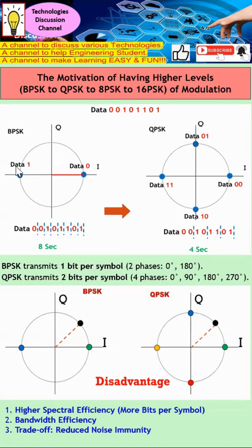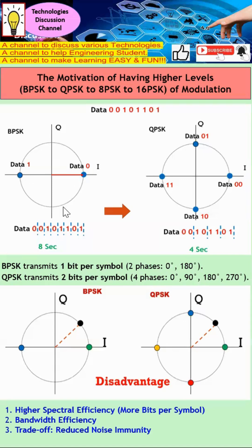From here I know that the message equals one. So you can see that if I have eight bits of data, and every bit requires one second to appear in the constellation diagram, I can conclude that I will need eight seconds to represent this eight-bit data.